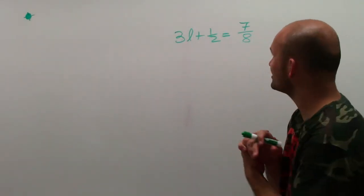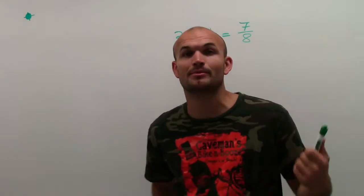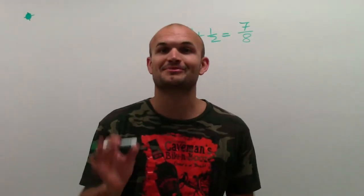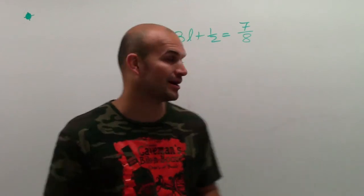Here we go. 3L plus 1 half equals 7 eighths. What I'm going to do is show you two different ways to solve this problem.